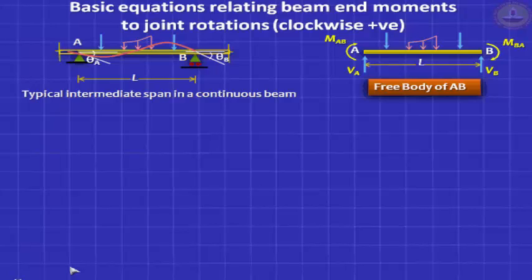The equation we are going to derive is an expression for MAB in terms of theta A and theta B. Since there is no deflection here, they are properly called the slope equations. How can we derive expressions for MAB and MBA in terms of theta A and theta B?